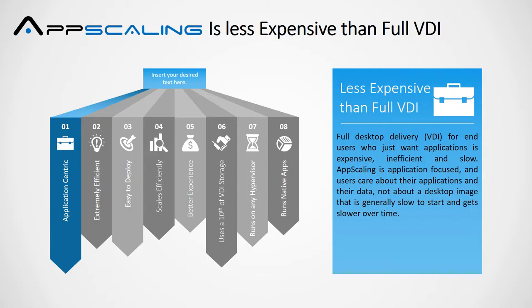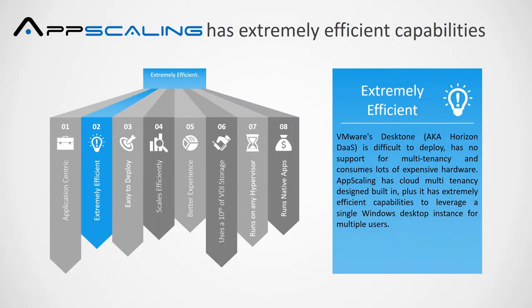App Scaling is application-focused, and users care about their applications and their data — not about the desktop image that is generally slow to start and gets slower over time. App Scaling has extremely efficient capabilities. VMware's DeskTone, also known as Horizon DAS, is difficult to deploy, has no support for multi-tenancy, and consumes lots of expensive hardware.